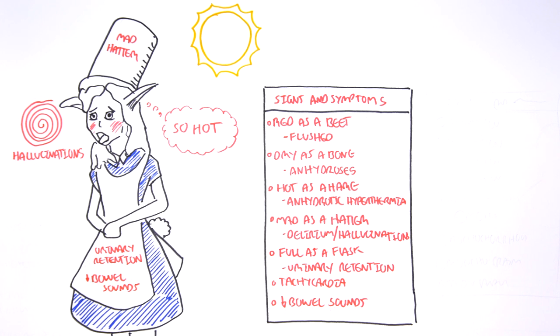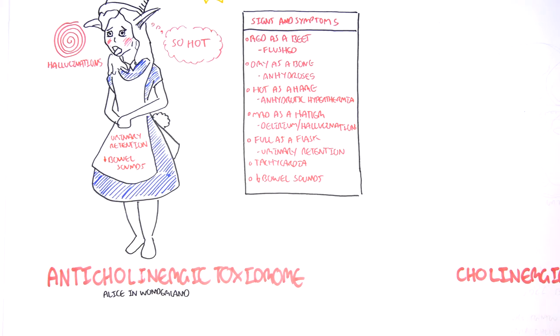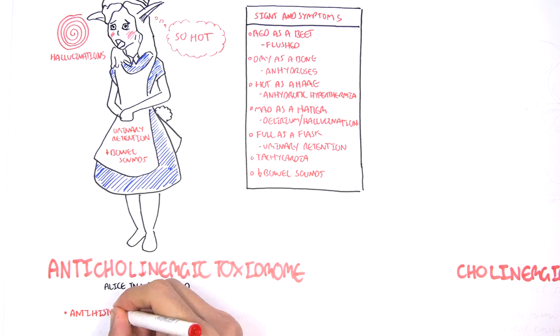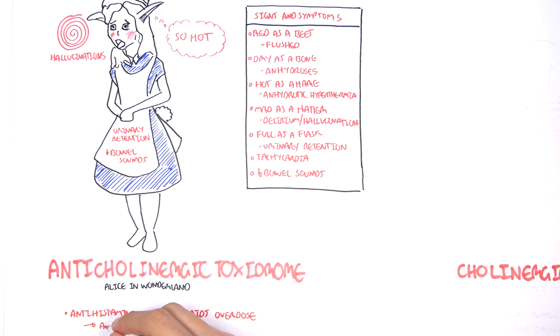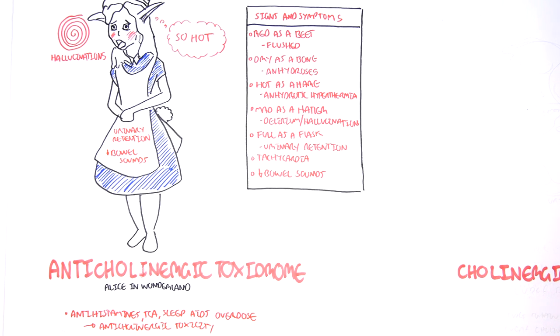Causes of anticholinergic toxicity is the use of some medications for example. Overdose of medications such as antihistamines, tricyclic antidepressants and sleep aid medications.